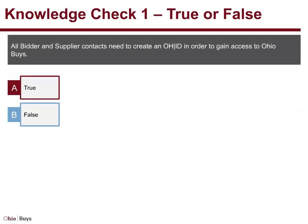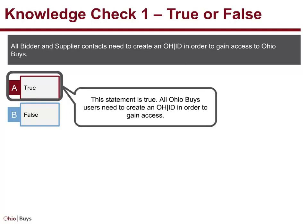Knowledge Check 1. True or False: All bidder and supplier contacts need to create an OHID in order to gain access to OhioBuys. This statement is true. All OhioBuys users need to create an OHID in order to gain access.